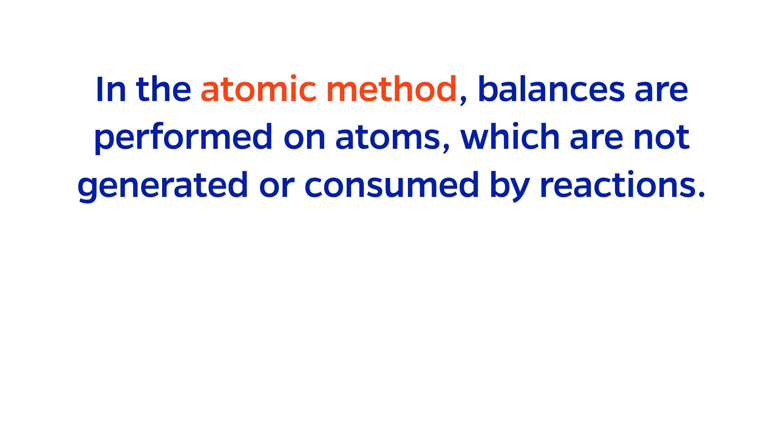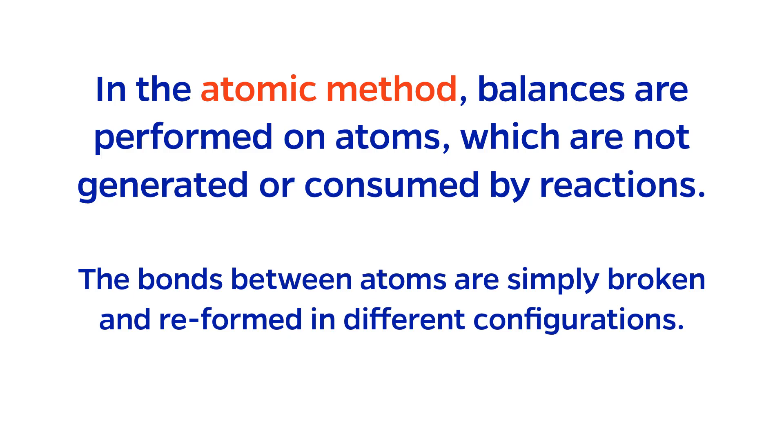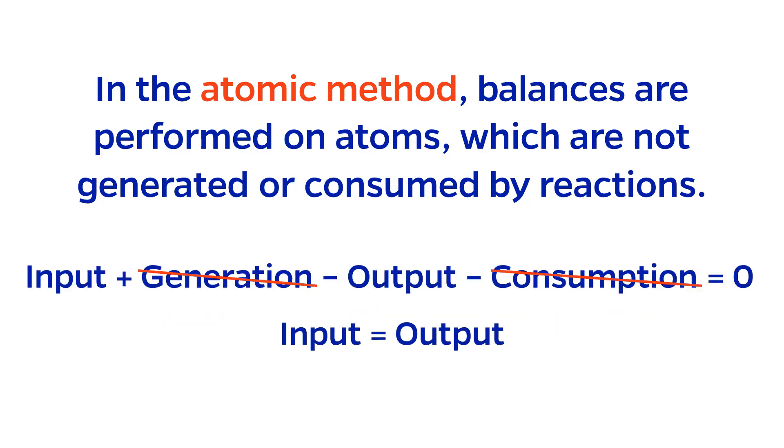In the atomic method, the material balances are on atoms. Unlike molecules, atoms are not generated or consumed during a chemical reaction. The bonds between the atoms are simply broken and reformed in different configurations. Therefore, generation and consumption terms are zero for the atomic method, and the general balance equation simplifies to in equals out, even though this is a reactive process.